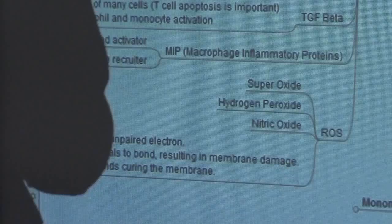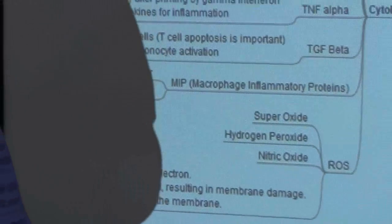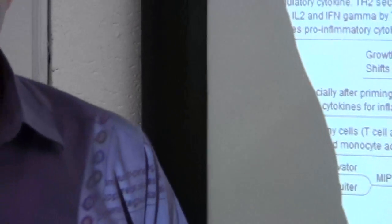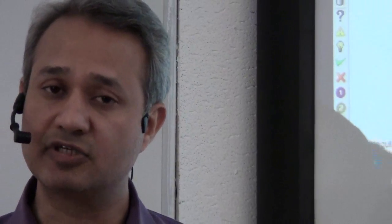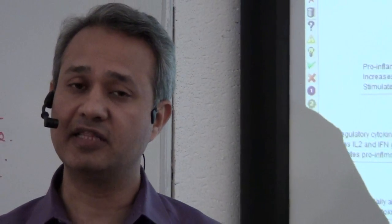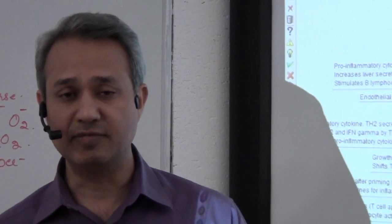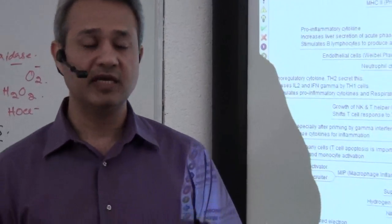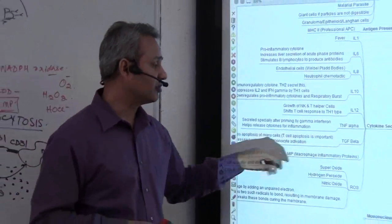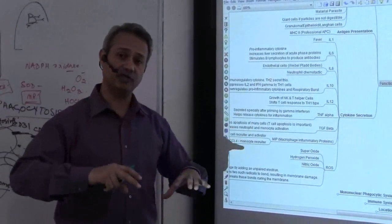Remember we talked about eosinophils and eotaxins coming from basophils and other cells which cause eosinophils to come over, and then the eosinophils release histaminases to reduce histamine. Similarly, tumor growth factor is also trying to calm down the immune system.